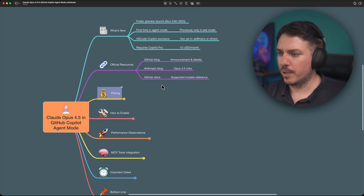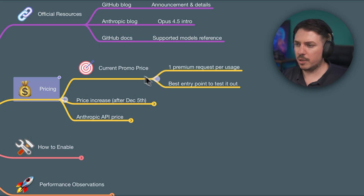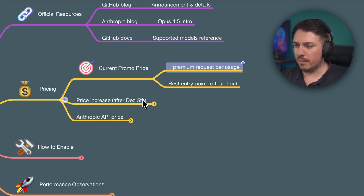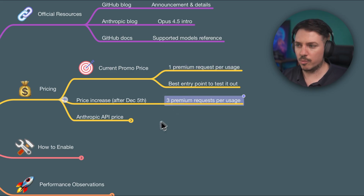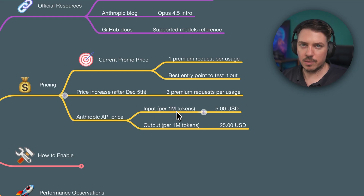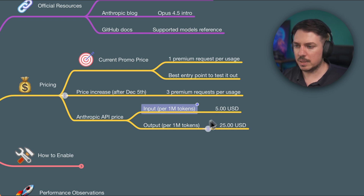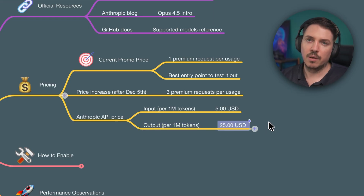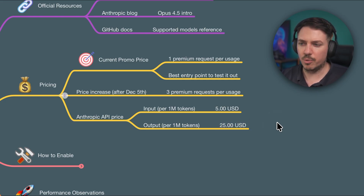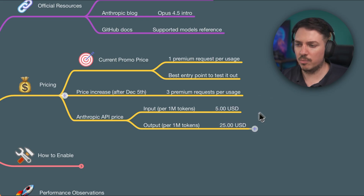Let's start with pricing. As you saw in the documentation from GitHub, the current price is one premium request per usage, and this is available through December 5th. Starting from the 6th, it will cost three premium requests. For reference via API, 1 million input tokens costs around $5 US, and output costs $25. The previous version, Claude Opus 4.1, had output tokens costing 3 times more — $75 US. Thanks to that price decrease, we have this tool available in GitHub Copilot agent mode.